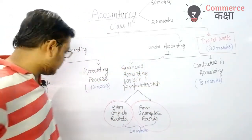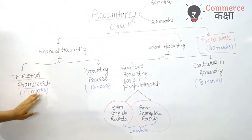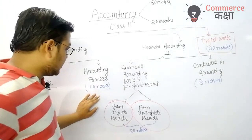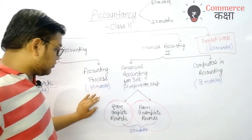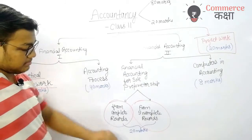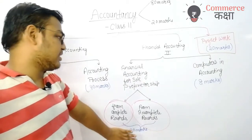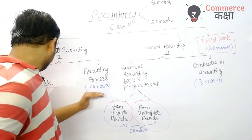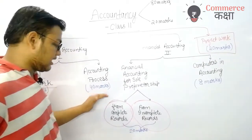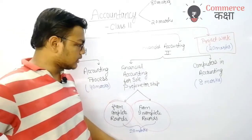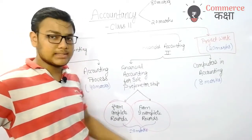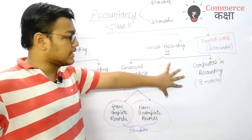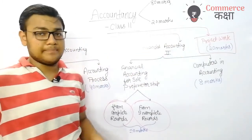In total: 12 marks for theoretical framework, 40 marks for accounting process — equal to 52 marks — plus 20 marks for financial accounting for sole proprietorship, giving 72 marks. Add 8 marks for Computers in Accounting, which totals 80 marks for the exam, plus 20 marks for the project.